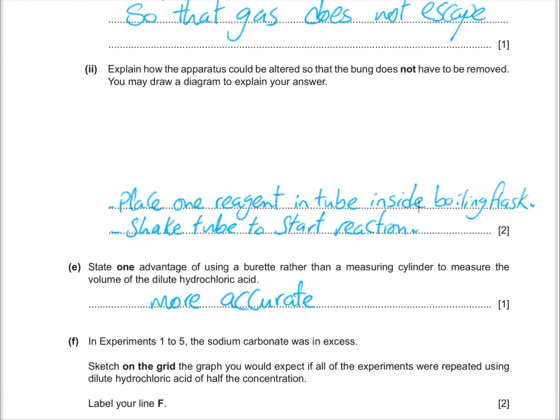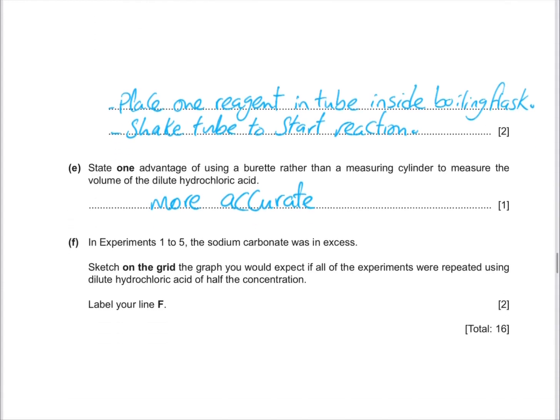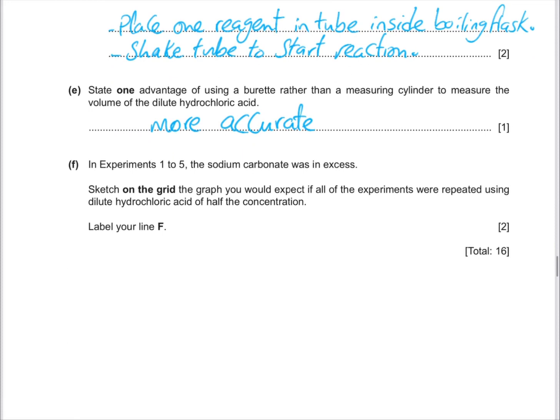You may draw the diagram or you may draw a different setup. We'll put the reagent in the tube inside the boiling flask. We're going to shake or we'll put the tube inside to start the reaction. One advantage of using the burette before measuring cylinder is it will be more accurate.